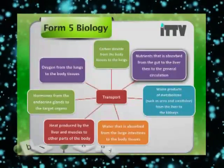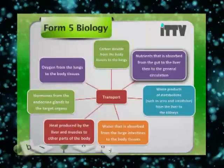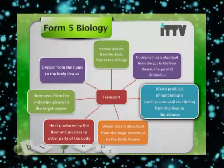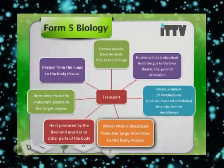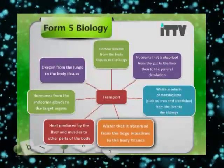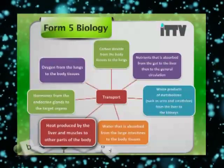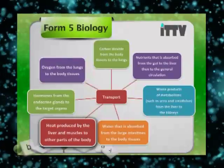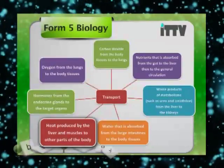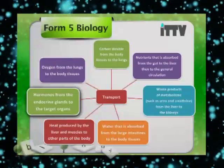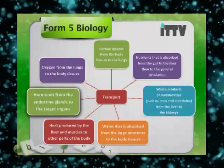Nutrients such as glucose, amino acids, and lipids are absorbed from the gut system to the liver and then return to the general circulation. Waste products of metabolism such as urea and creatinine are transported from the liver to the kidneys for elimination. Water absorbed from the large intestines is returned to the body tissues via the blood. The heat produced by the enormous metabolic processes in the liver and muscles is distributed to all parts of the body, maintaining body temperature at around 37 degrees Celsius. Blood is also a vital transportation system for hormones produced by the endocrine glands and carried to their target organs.